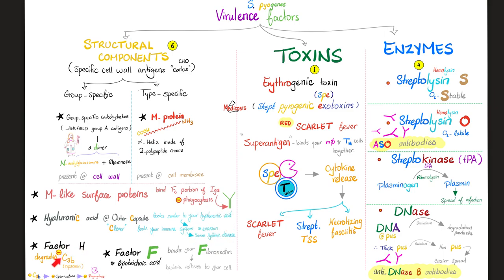Factor H degrades C3b — a complement protein, subtype 3b. The normal function of C3b was opsonization, to make the bacteria tasty so the macrophage can eat it. But the bacteria degrades C3b, so you cannot kill the bacteria — that's why factor H is a virulence factor. Factor F binds your fibronectin, another part of your connective tissue, so the bacteria adheres to your cell. This actually makes it easier to phagocytose the bacteria in this instance.